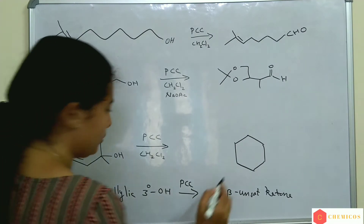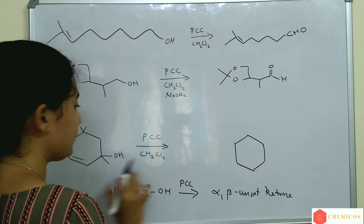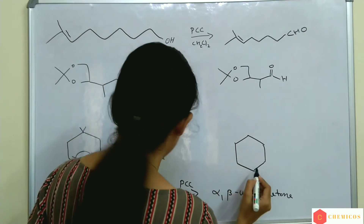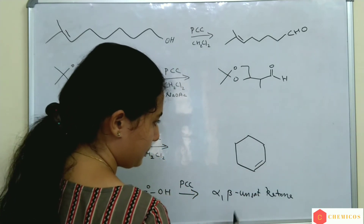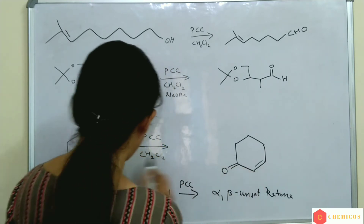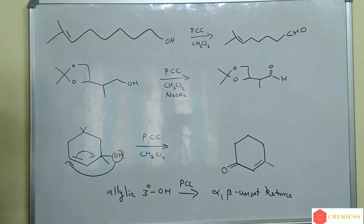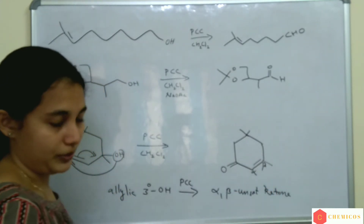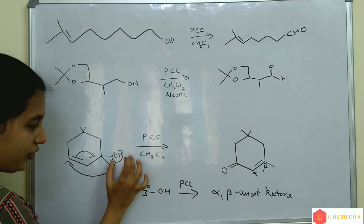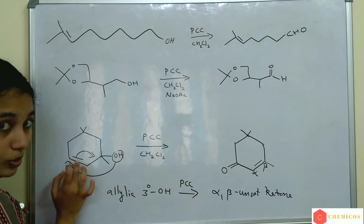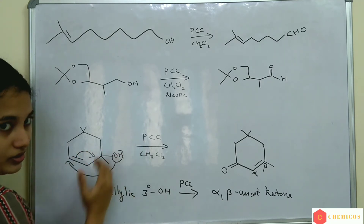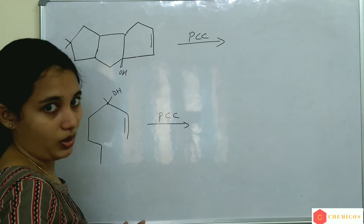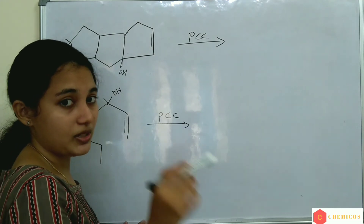Now this OH is converted to a ketone. The product is formed as follows: the OH is transposed to this side and the double bond is shifted here. You shift the OH group to the carbon-double-bonded side, and then the double bond shifts to the OH side. So in this example, a tertiary allylic alcohol — with a double bond here and tertiary OH here — is converted to an alpha-beta unsaturated ketone.